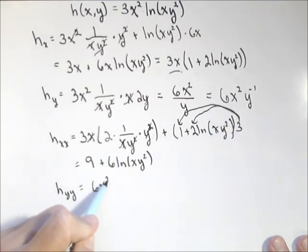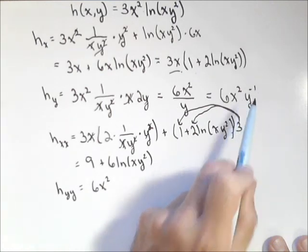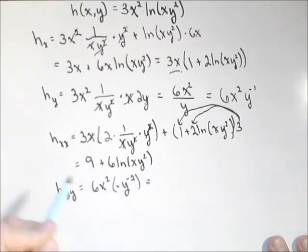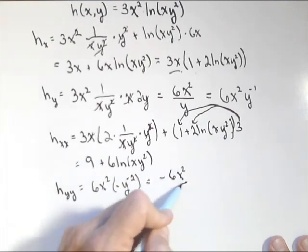So my six x squared, I already know, is in there. Now I'm gonna take the derivative of y to the negative one, which is negative y to the negative two. So I get negative six x squared over y squared.